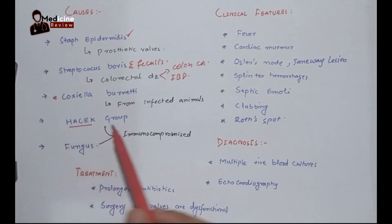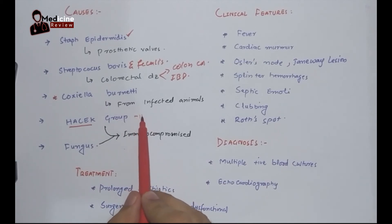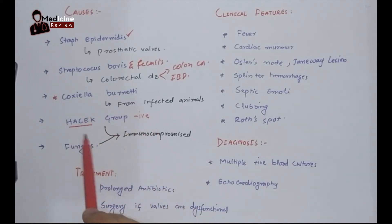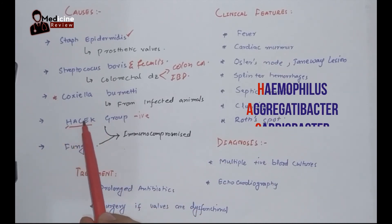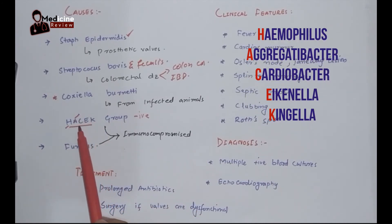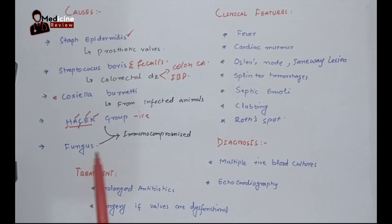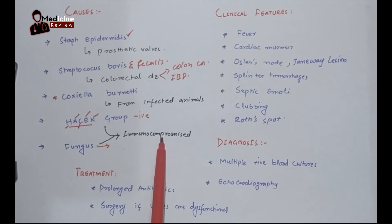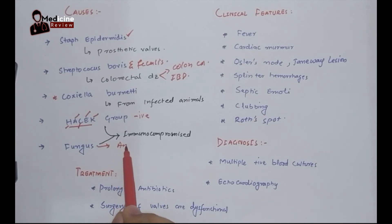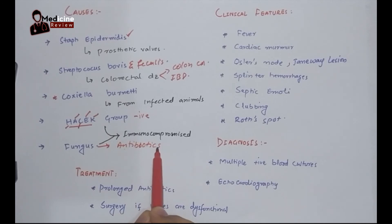The HACEK group and fungi cause infective endocarditis in immunocompromised patients. HACEK is a group of gram-negative bacteria: H for Haemophilus influenzae, A for Aggregatibacter, C for Cardiobacterium, E for Eikenella, and K for Kingella. Fungal infective endocarditis also occurs in immunocompromised patients and in patients taking large amounts of antibiotics, as killing bacteria allows fungi to enter the bloodstream.